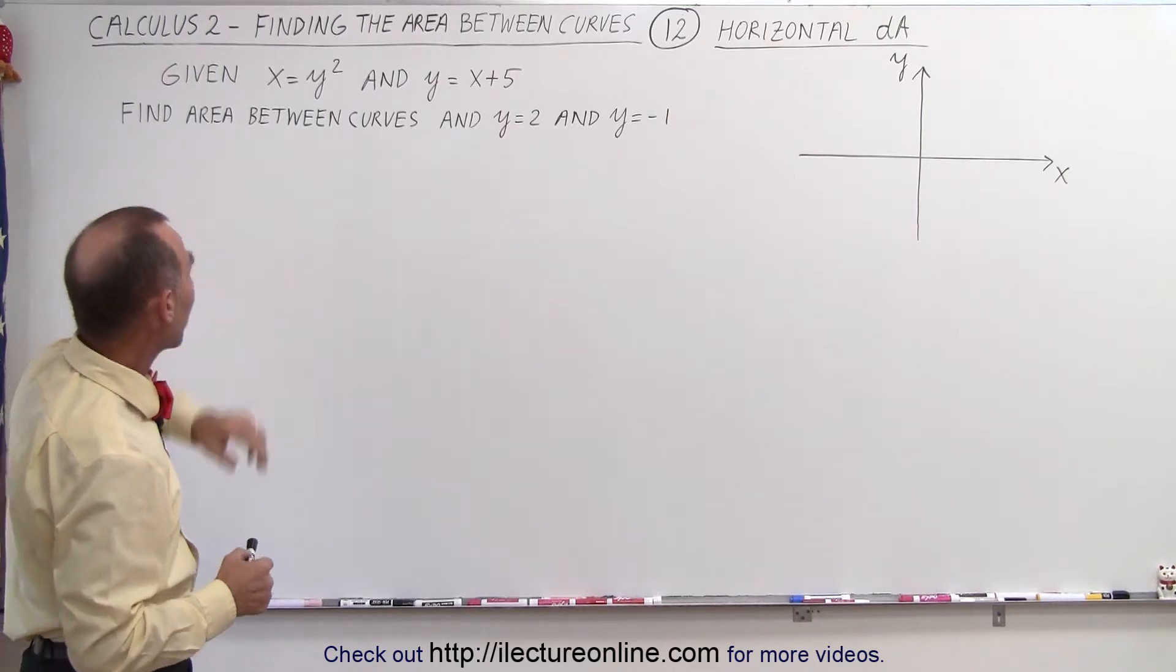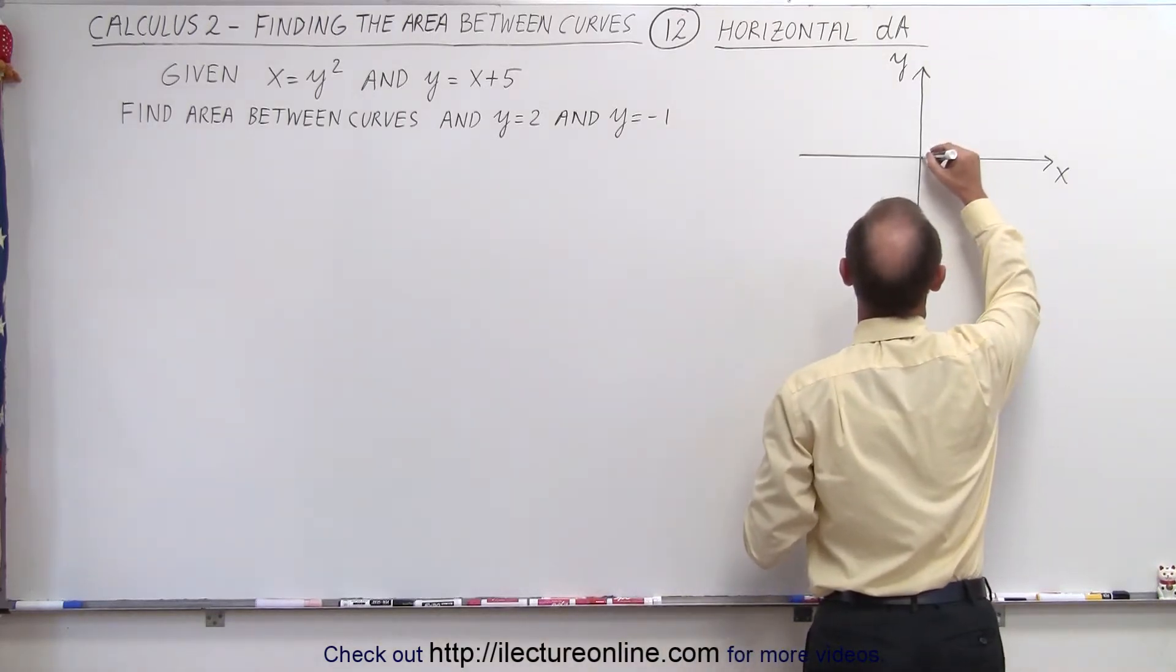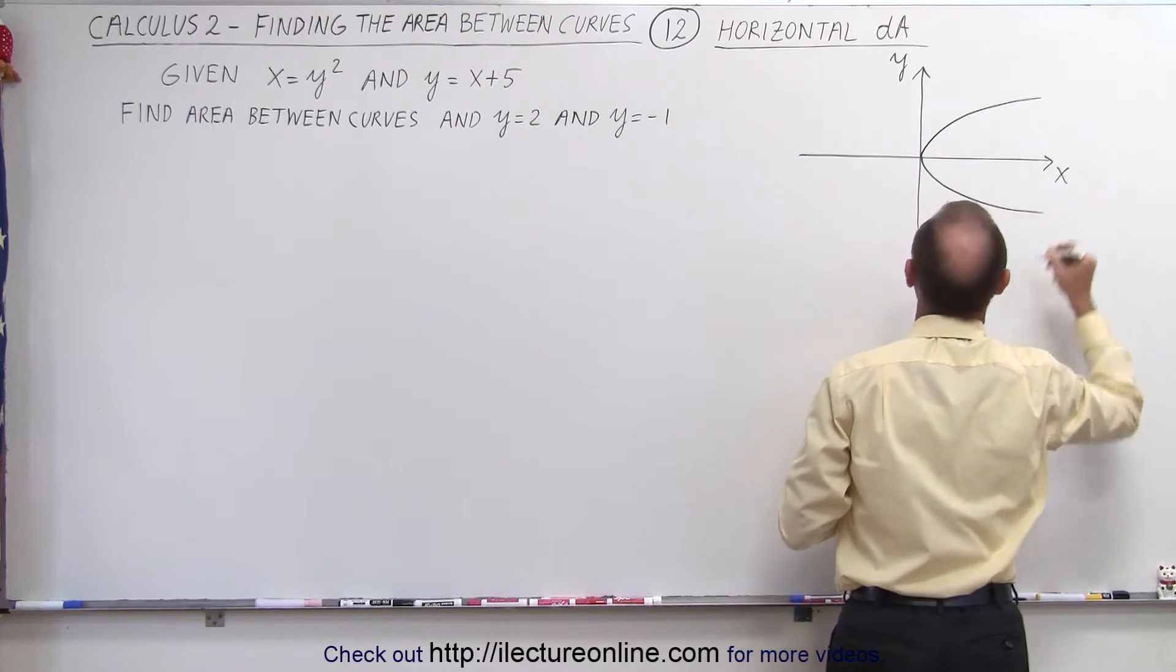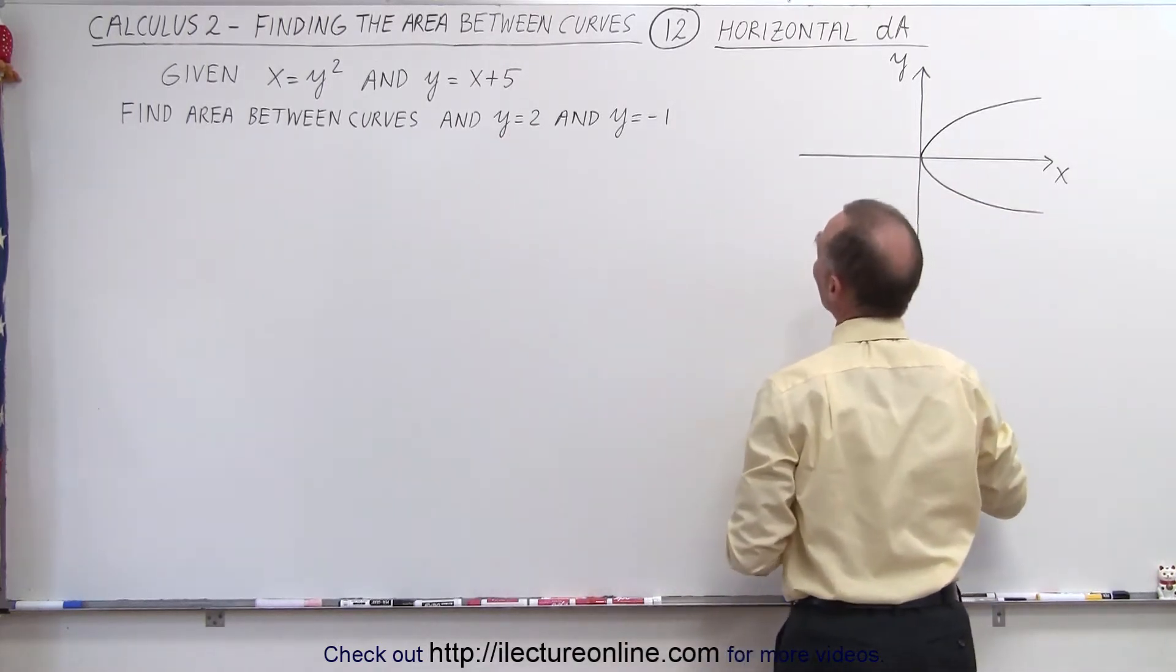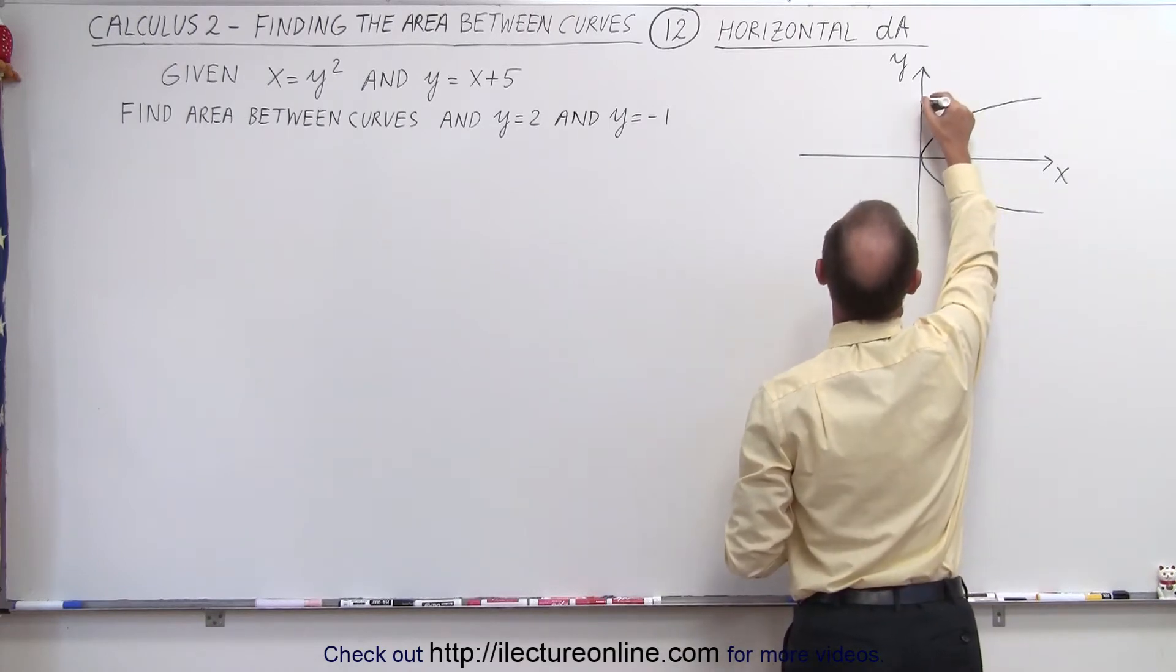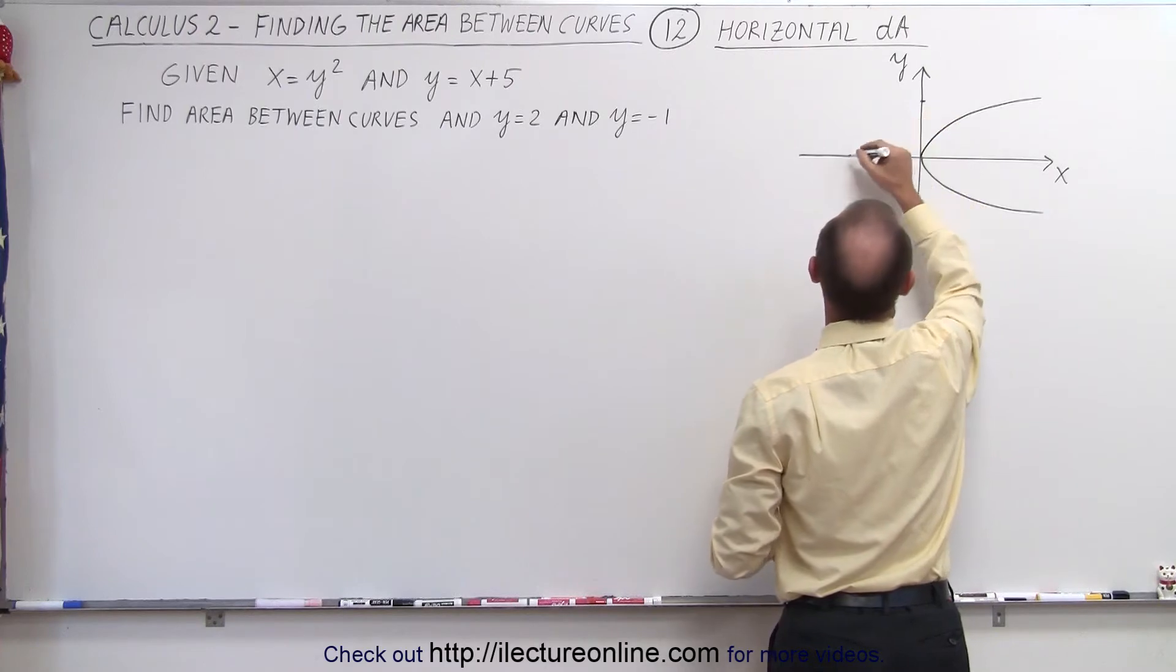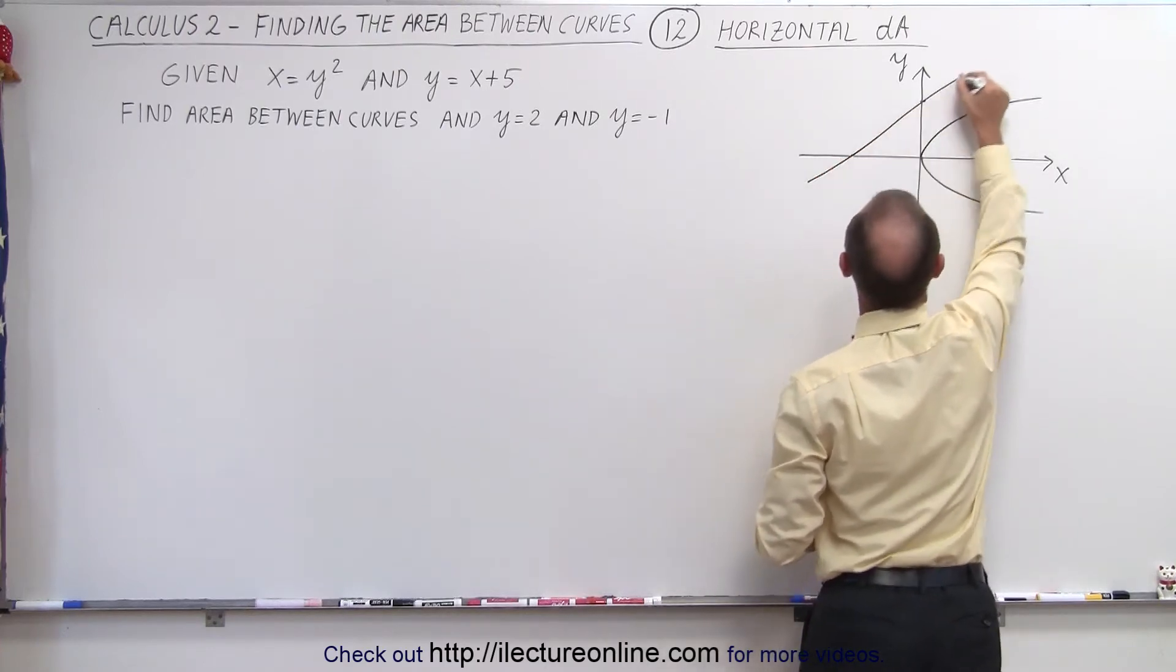So first let's graph x equals y squared, which is a parabola that's leaning over to its side, looks kind of like this. Then we have the straight line y equals x plus 5. When x is 0, y equals 5, and when y equals 0, x is minus 5, so that's right here. Let's draw a line that looks like this.